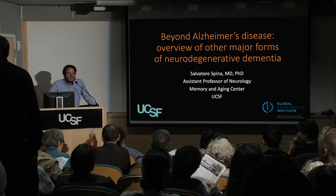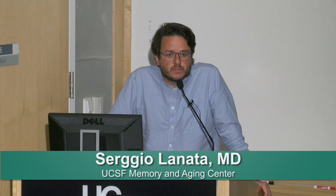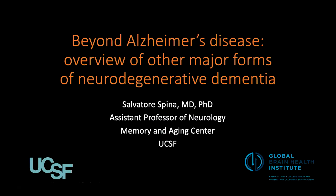Good evening everybody, I'm glad to be back, glad that you're all back for this third lecture of the session. Today we're going to have a colleague and friend of mine, Dr. Salvatore Espina, who's going to talk to us about other neurodegenerative diseases of the brain beyond Alzheimer's disease that can produce dementia and what those clinical syndromes look like.